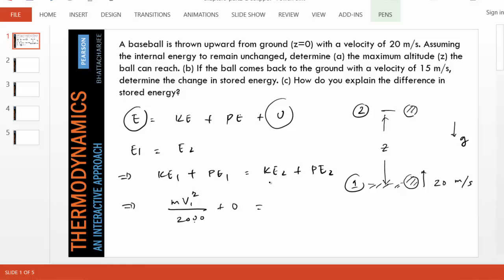And at the maximum height, KE2 will be zero because there is no velocity. And PE2 is mgZ divided by 1000, so the whole equation is in the unit of kilojoule. And that gives us the maximum height. As you can see, M gets cancelled.